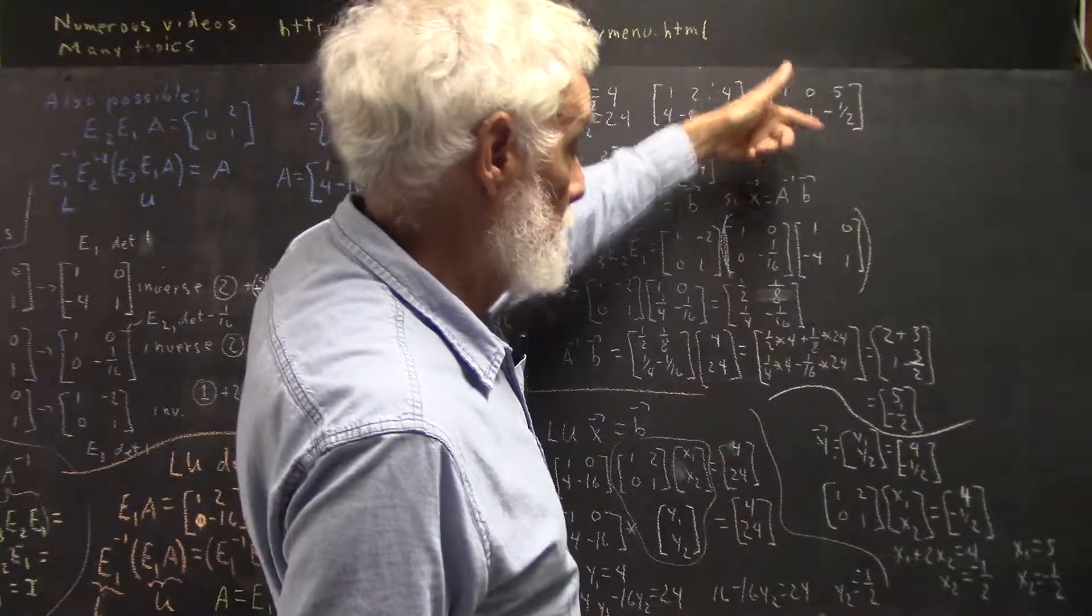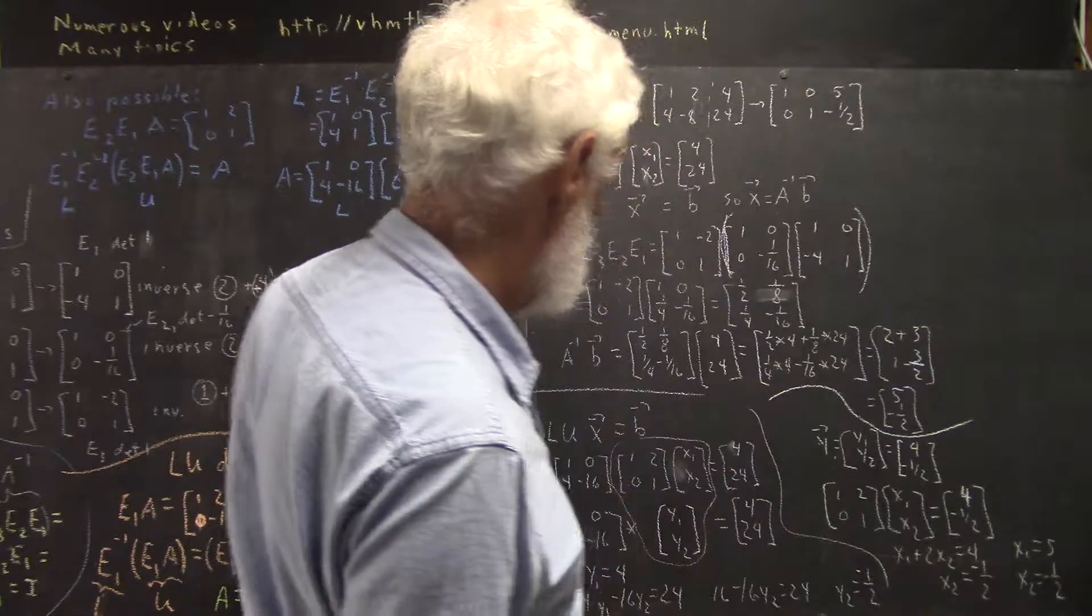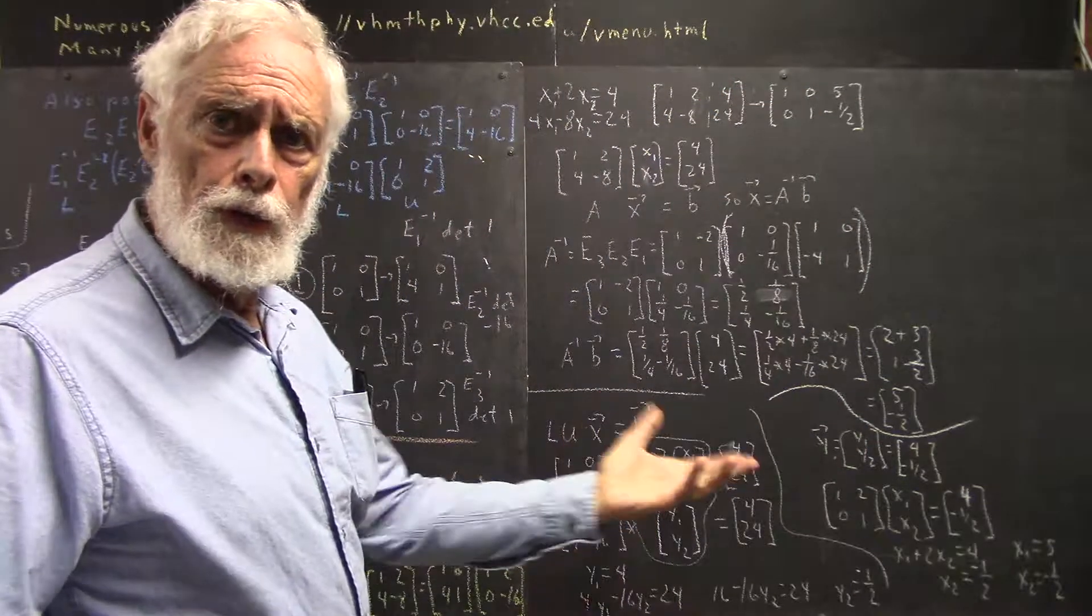We get 2 plus 3, 1 minus 3 halves, which is 5, negative 1 half. And this is the same as the solution that we get up here.